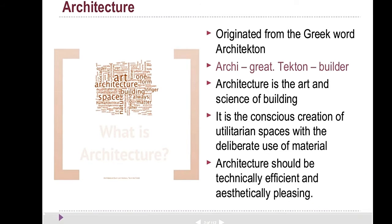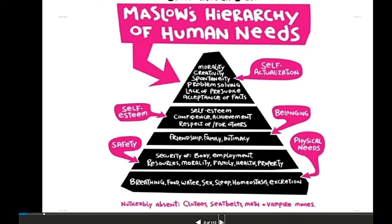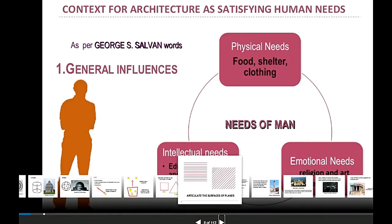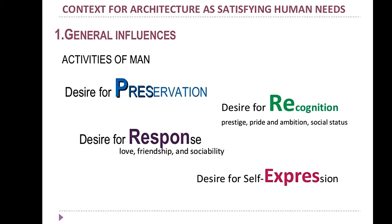There are other definitions of architecture, but the shortest one is that architecture is the science of designing a certain building. So this is our introduction for today. The first lesson for our subject is the general influences of architecture — the factors that influence the design of a building or structure.